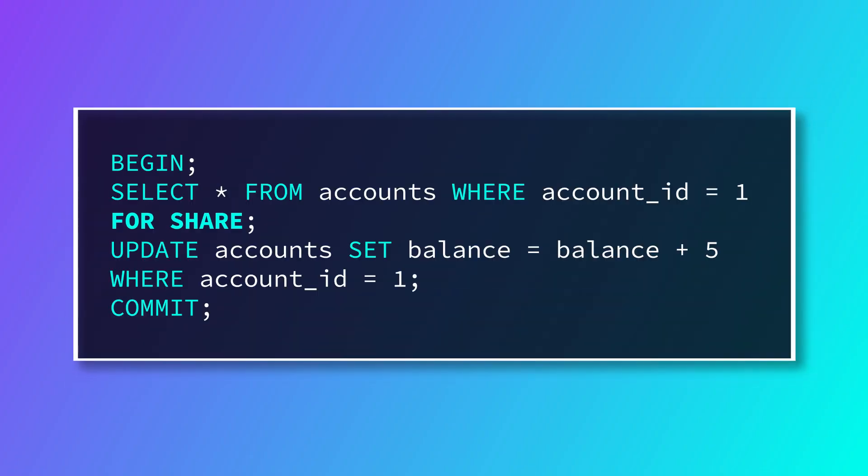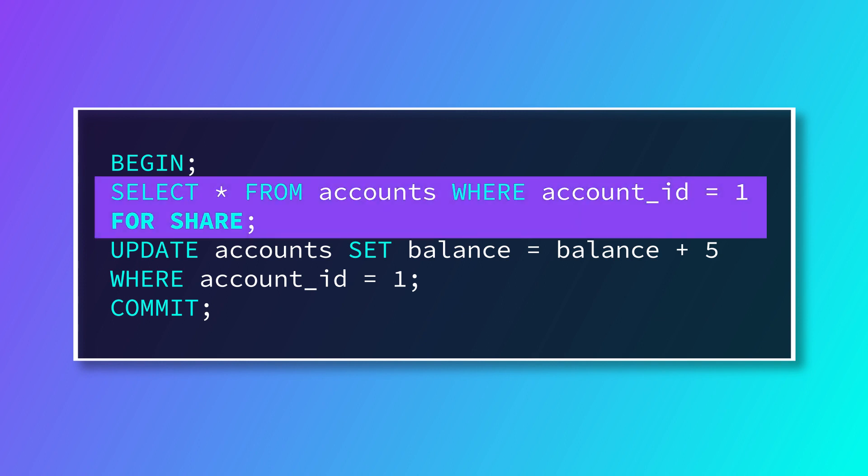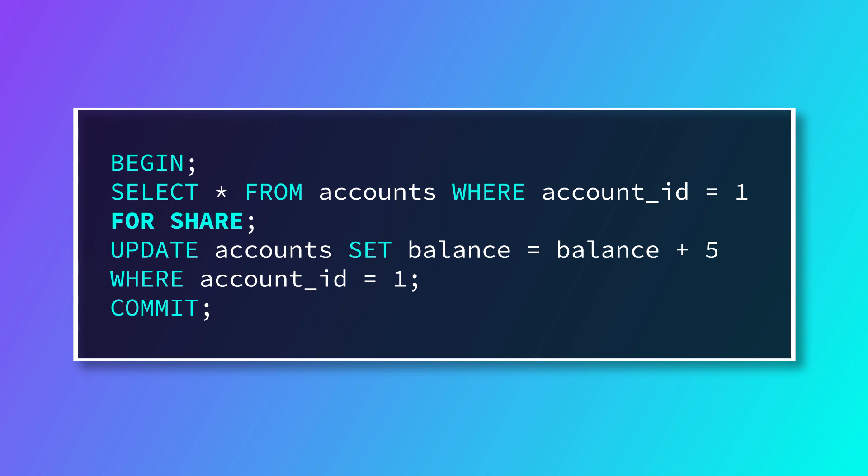But it's worth noting that it does depend on the type of SQL database that you're using. Some databases, like Postgres, also support weaker transactional row locking in SELECT FOR SHARE, which functions essentially the same way but locks the relevant rows only for updates and deletes. And not all SQL databases even support SELECT FOR UPDATE — for example, SQLite doesn't, because it locks the entire database while a transaction is processing.